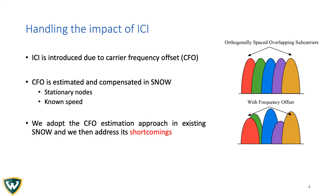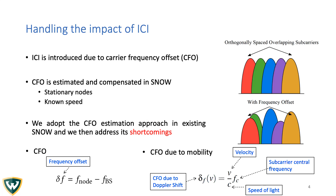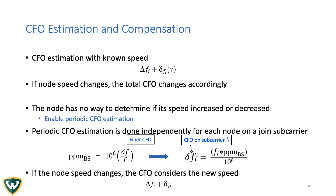If we have a node and a base station, the CFO is calculated during the join process — it is basically the difference between their frequencies. When the node is moving at speed V, the Doppler frequency offset is calculated as follows, where V is the velocity, C is the speed of light, and F_c is the sub-carrier central frequency. Considering delta F as the CFO when the node is stationary, we experience a total CFO of delta F plus delta F_doppler(V), which is the Doppler frequency offset — a summation of both offsets. However, if the node speed changes, the total CFO changes accordingly, so we need to re-estimate the CFO.